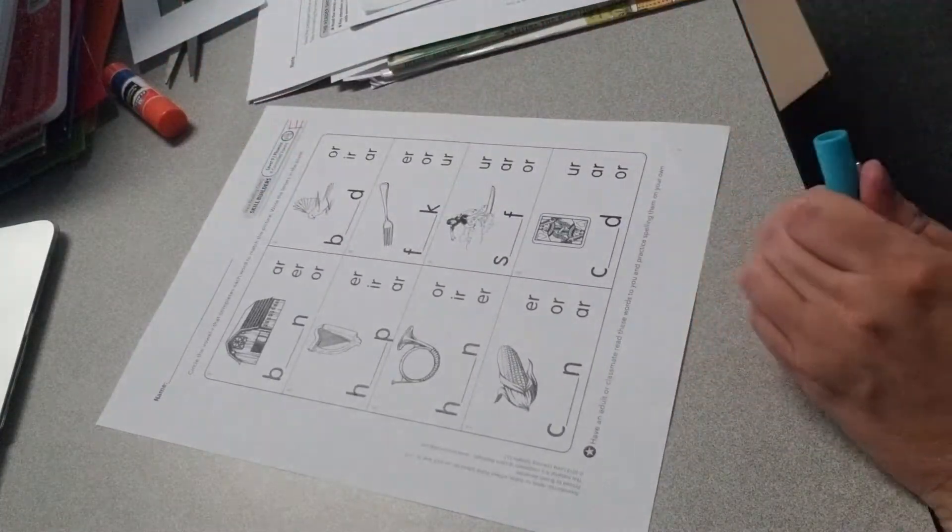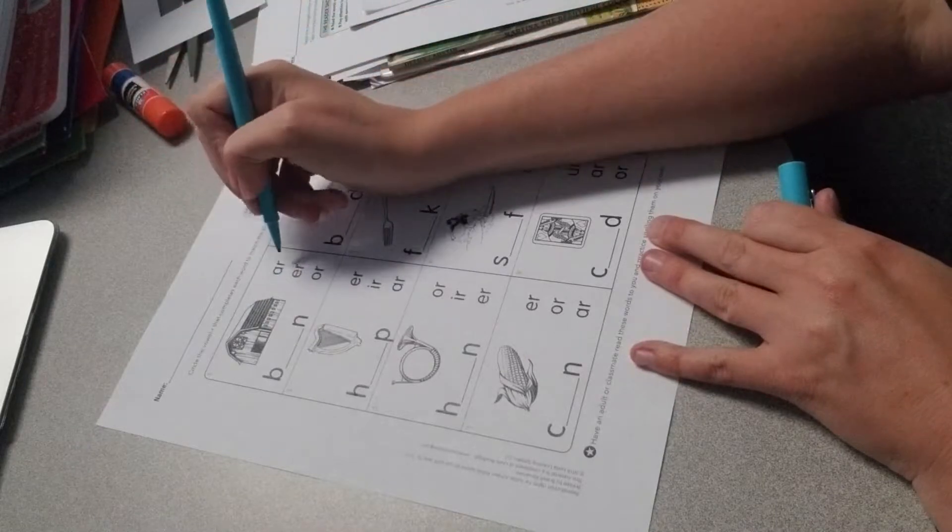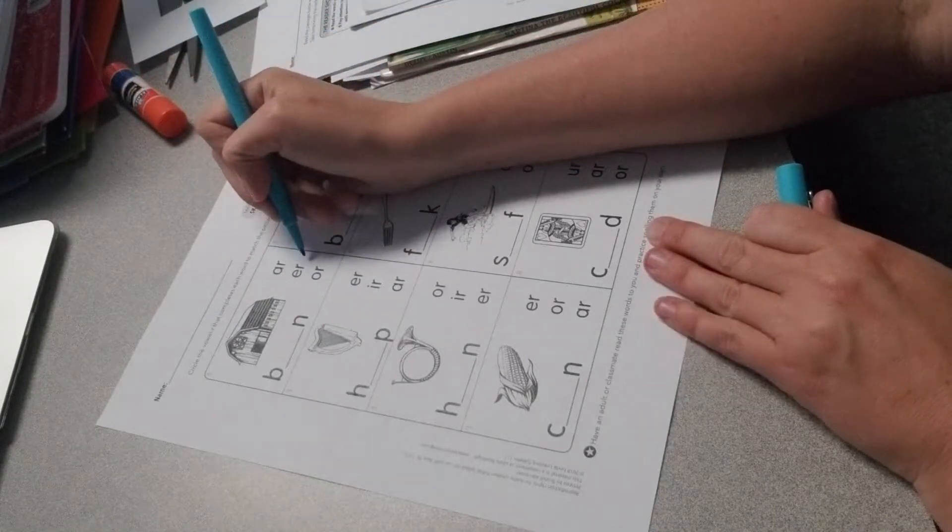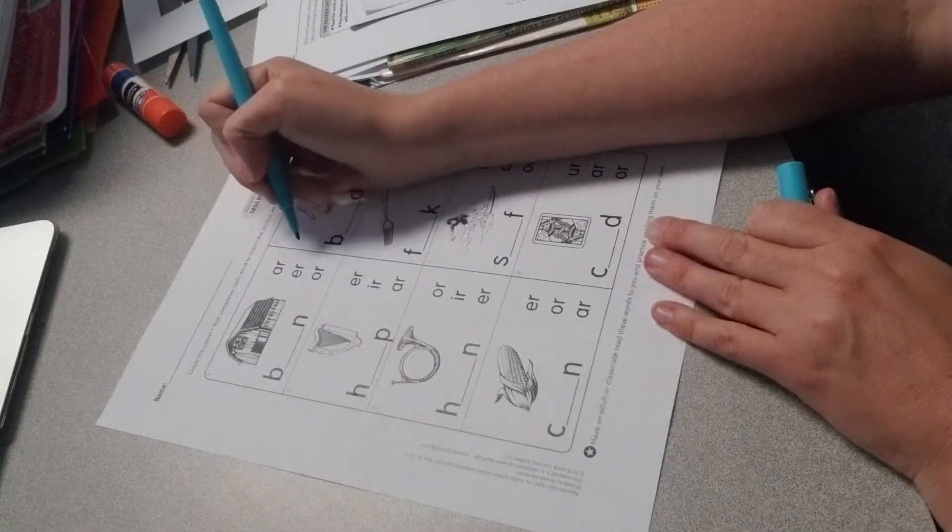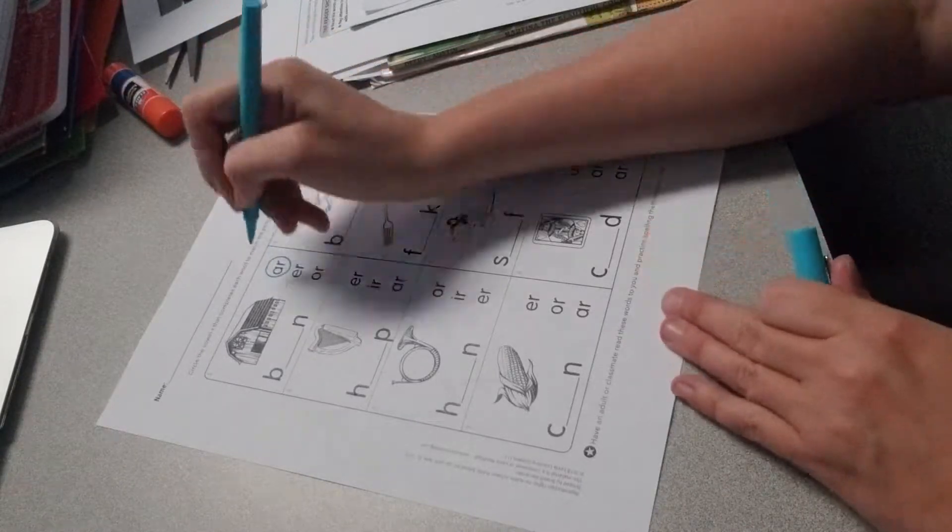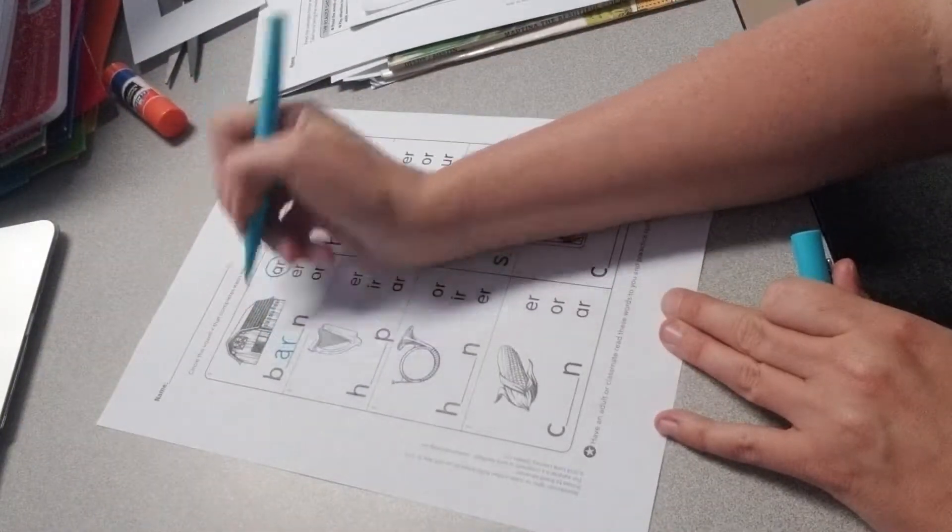So the first one has a picture of a barn. So we would circle the AR, the ER, or the OR. So barn, it's the AR. So then you would write AR in the blank.